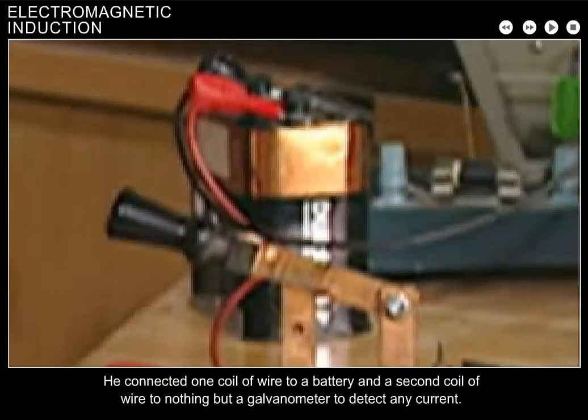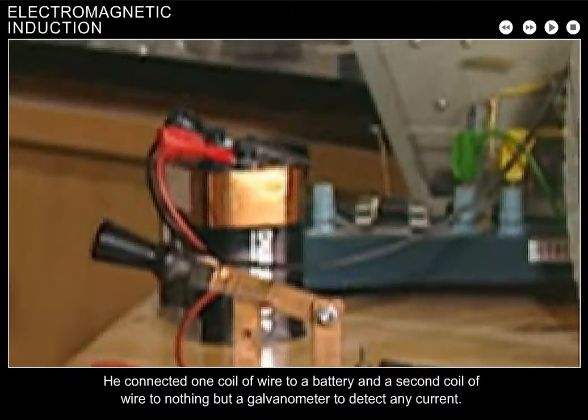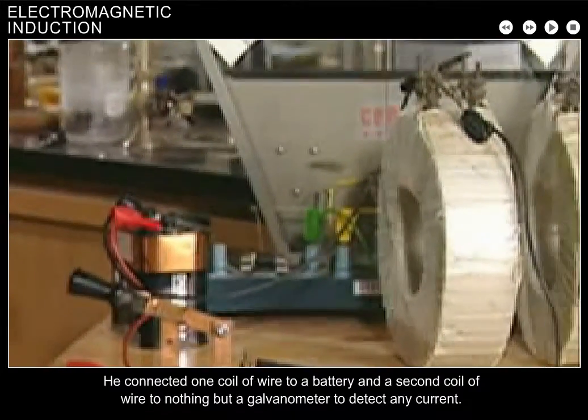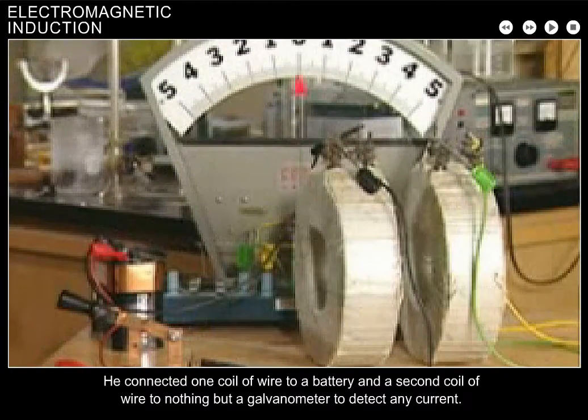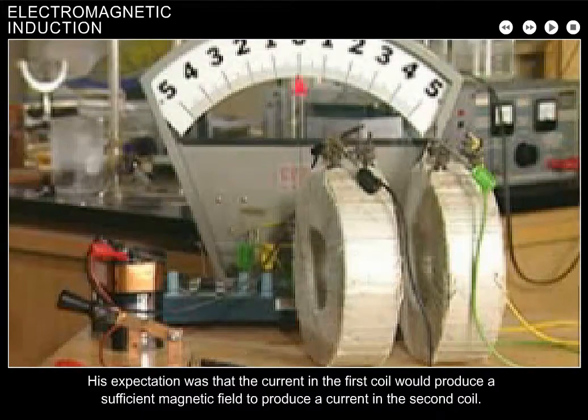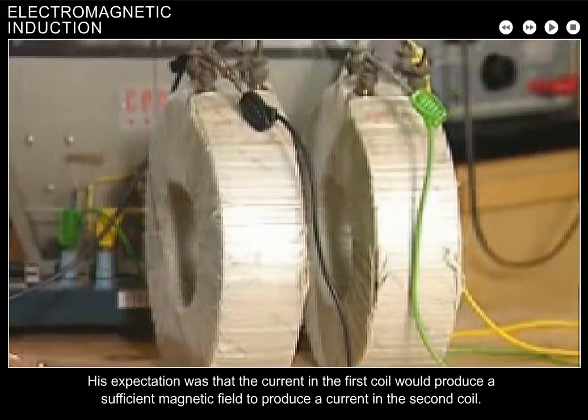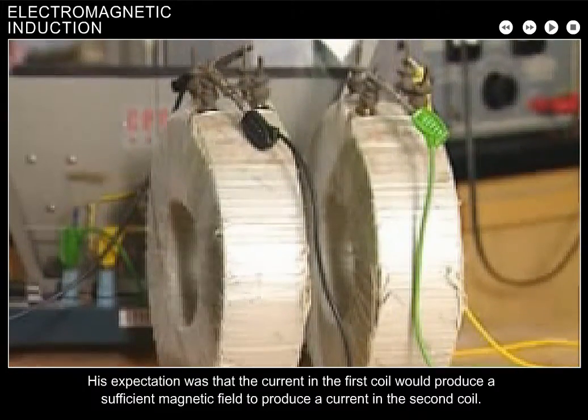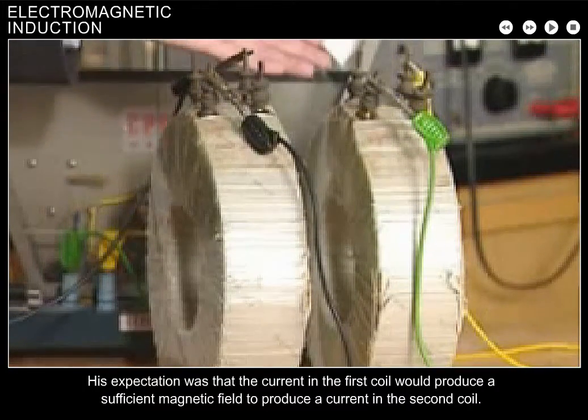He connected one coil of wire to a battery and a second coil of wire to nothing but a galvanometer to detect any current. His expectation was that the current in the first coil would produce a sufficient magnetic field to produce a current in the second coil.